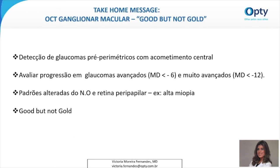Para fechar, o take-home message do OCT ganglionar: ele tem importância na capacidade de detecção de glaucomas pré-perimétricos com acometimento central. É importante na avaliação de progressão em glaucomas avançados e muito avançados, principalmente naqueles casos em que já se atingiu o efeito floor. Também pode haver ganho em pacientes com alta miopia, com padrões alterados de nervo óptico e retina peripapilar. Lembrar, no entanto, que apesar de bom, não é padrão ouro. Ainda não se tem padrão ouro das medidas dadas pelo OCT das camadas alteradas pelo glaucoma, ou seja, nenhuma dessas medidas é capaz de suplantar a outra. A melhor prática atual é utilizar as medidas de maneira complementar.